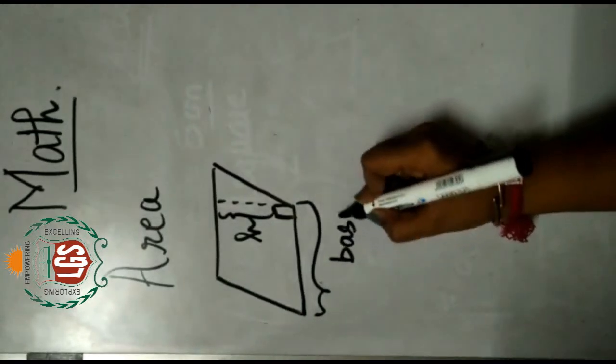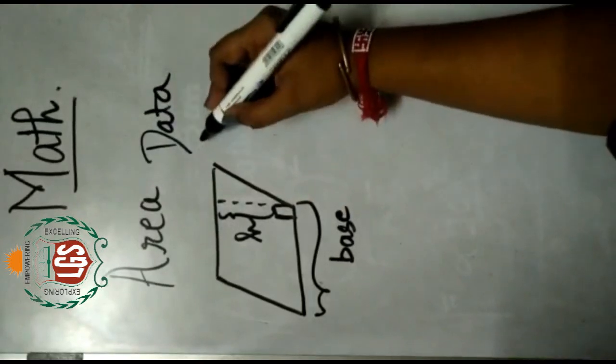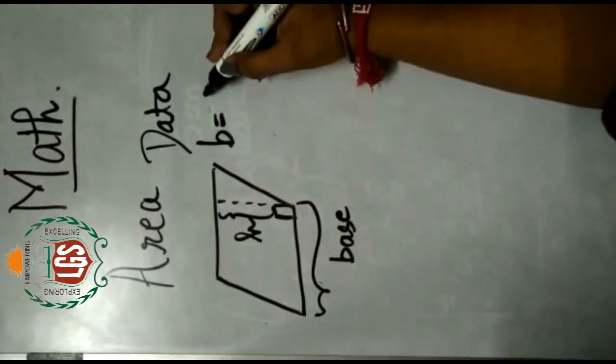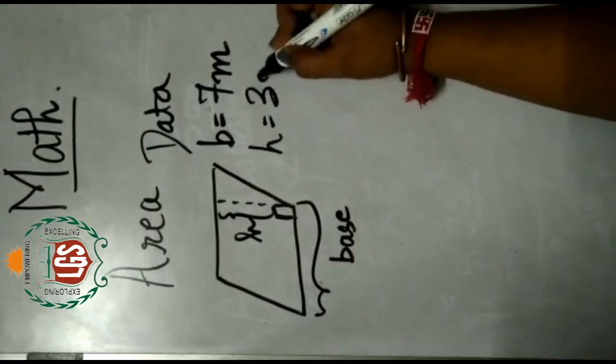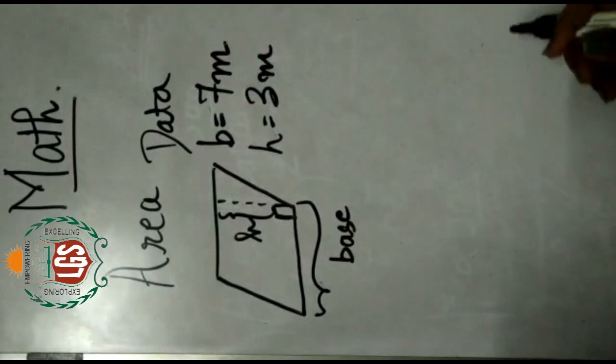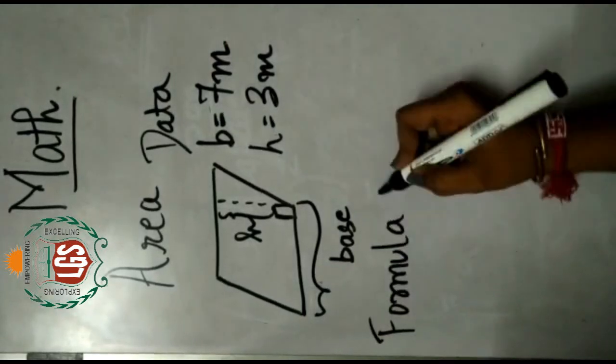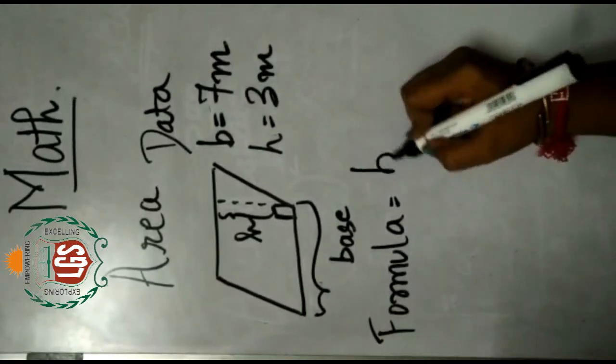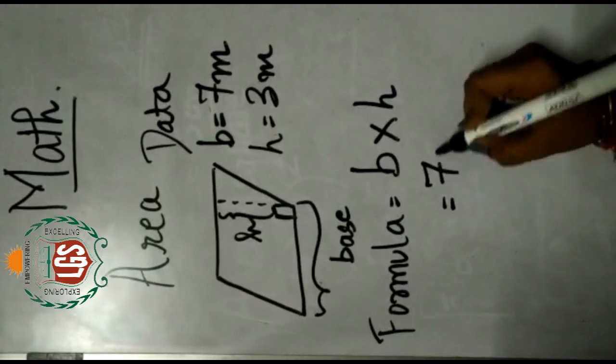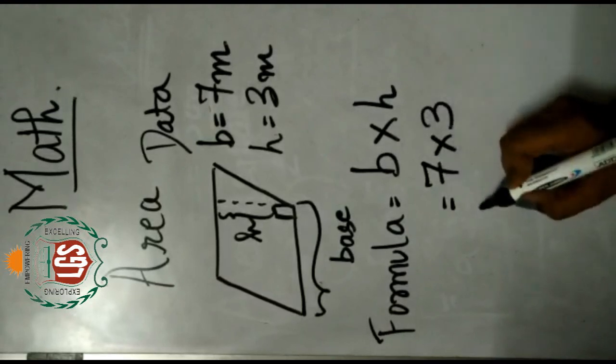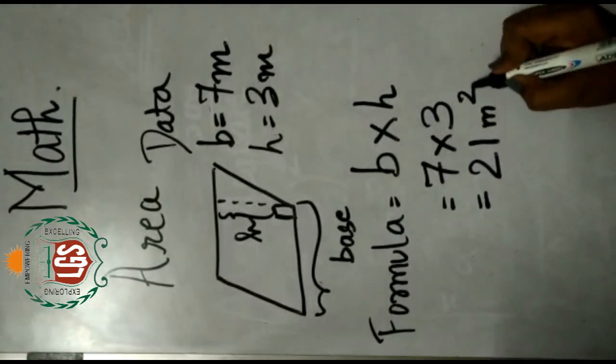B stands for base and H stands for height. So here in the data if they give you that the base of the parallelogram is 7 meter and height is 3 meter, find the area of a parallelogram. So the formula for area of a parallelogram is base into height. The base is already given 7. Height is also given 3. So 7 threes are gives you 21. The units are meter, therefore meter square.